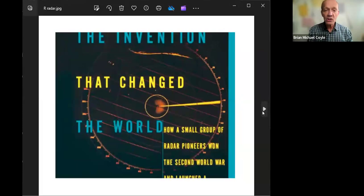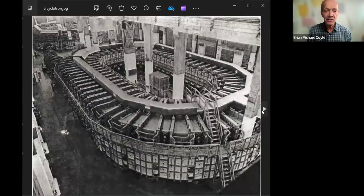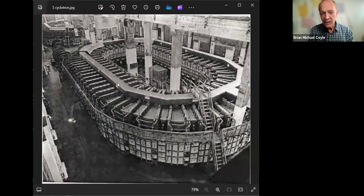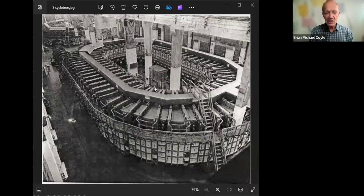During the Manhattan Project, Loomis provided the scientific basis, organized, and funded radar's development. Loomis also helped finance Lawrence's cyclotron in Berkeley and was involved in the development of the cyclotrons that produced the atomic bomb material in Tennessee.